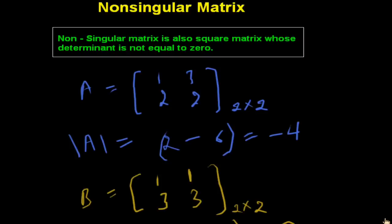The second term is non-singular matrix, which is the opposite of a singular matrix. A non-singular matrix is also a square matrix whose determinant is not equal to zero.